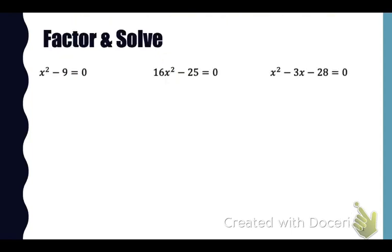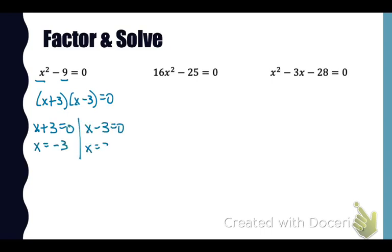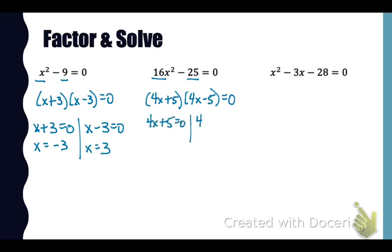Stay in your notes packet and let's work these example problems. We need to factor and solve x squared minus 9. I see a difference of squares, because I can square x to get x squared and 3 to get 9. So that factors as x plus 3 times x minus 3. Setting those equal to 0, our two solutions are negative 3 and positive 3. The next problem is also a difference of squares — 4x squared minus 25 factors as 4x plus 5 times 4x minus 5. Setting those equal to 0 and solving, our answers are negative 5/4 and positive 5/4.